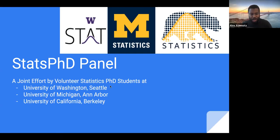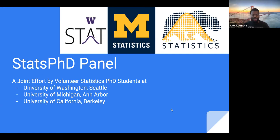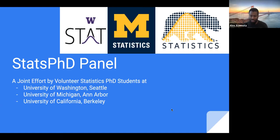Welcome everyone, this is the Stats PhD grad school panel — a joint effort between stats students at UC Berkeley, University of Washington, and University of Michigan. The basic goal of the panel is to do a couple of things.